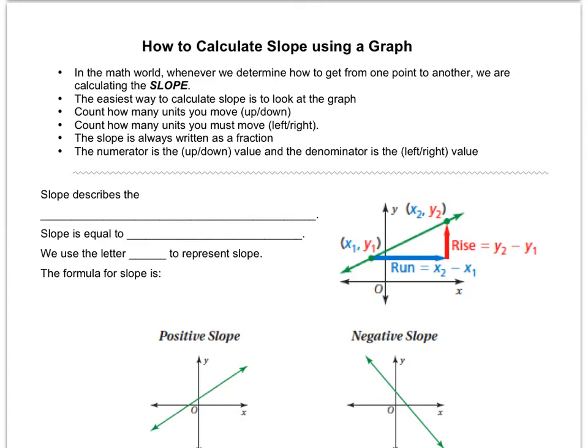The easiest way to calculate slope is to look at a graph. You count how many points you move up, then you count how many points you are up or down, then you count how many points you move left or right. It must always be written as a fraction, and the numerator is the up-down value and the denominator is the left-right value. So those are the major important pieces about slope.